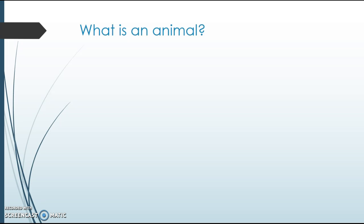The first thing we need to identify is: what is an animal? You guys know that an organism is a living thing, according to Mrs. Greff, but to classify a living thing as an animal, you need to realise that they have a similar cell structure. We briefly talked about cell structure in the last lesson.